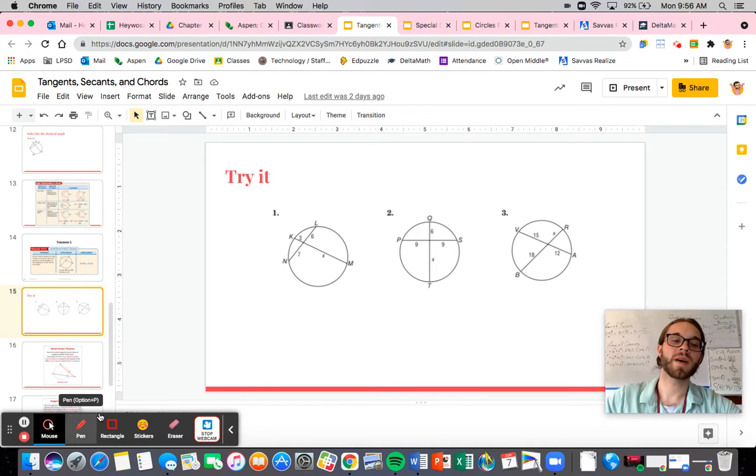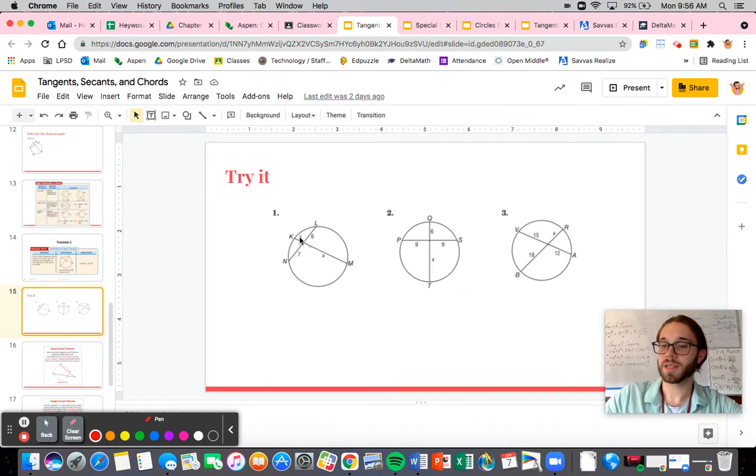In terms of how we do this, remember, the parts of the chord multiplied together are equal to the other parts of the other chord multiplied together. So 3 times x is equal to 6 times 7. So 3x is equal to 42. So x is equal to 14.